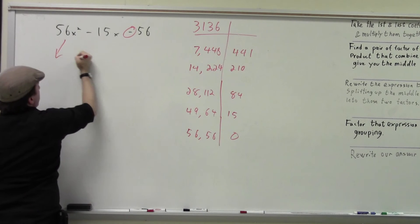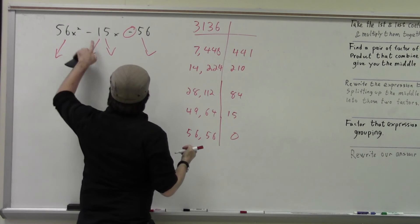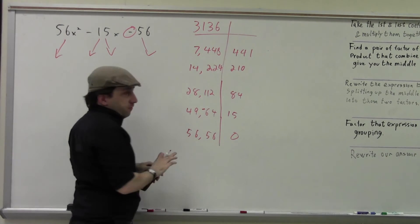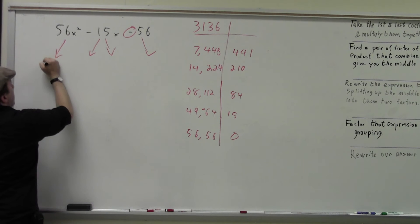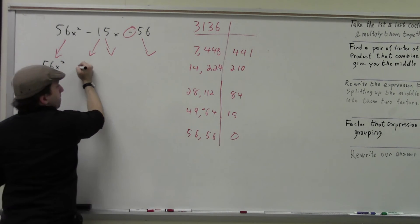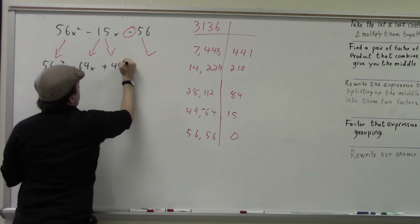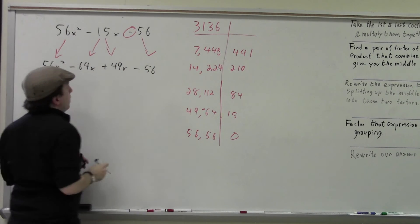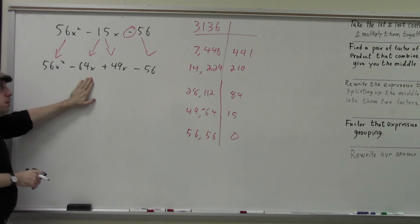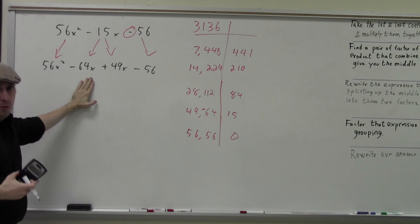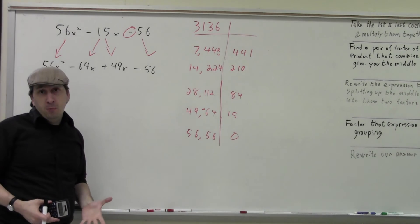We've figured out our pair, and we know that this factor is negative — so we're looking at negative 64, because our larger factor is going to be negative. We're going to rewrite our equation. Now I want to factor out the greatest common factor. One issue you might encounter is that you don't always notice the greatest common factor first, so let's deliberately make a mistake here.